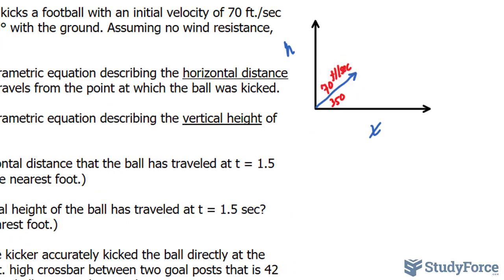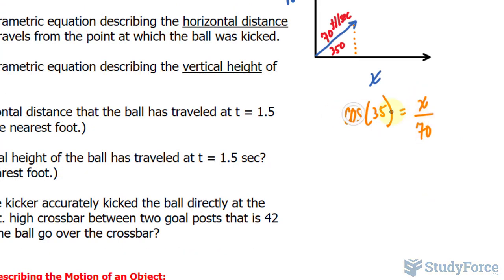To find the parametric equation that represents the horizontal distance, we use trigonometric functions. A trigonometric function here relates the hypotenuse and the adjacent side of this triangle. What relates hypotenuse and adjacent is cosine. So cosine of 35 equals the adjacent, which I'll call X, over the hypotenuse which is 70. Multiplying both sides by 70, I have 70 times cosine of 35 degrees equals X.